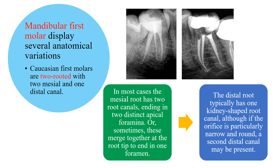Regarding the mesial root and mesial canals: in the distal root, usually there is only one kidney-shaped root canal, though sometimes a second distal canal may also be present.